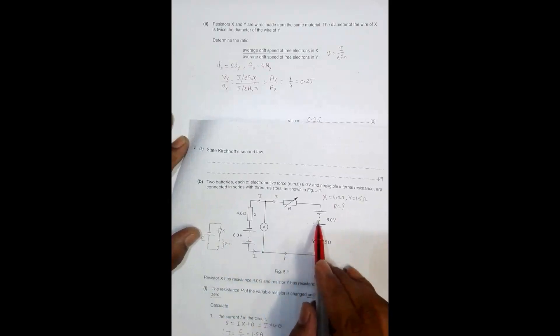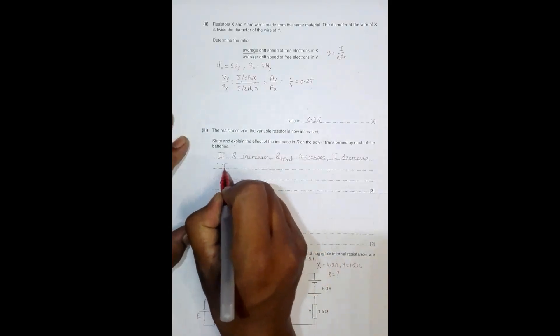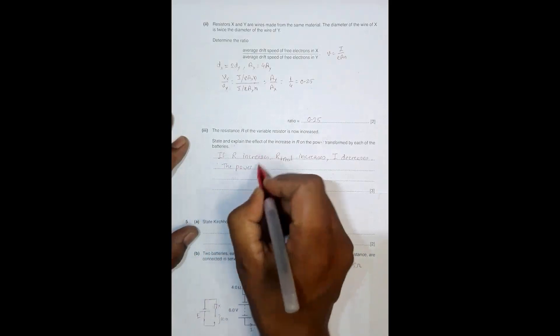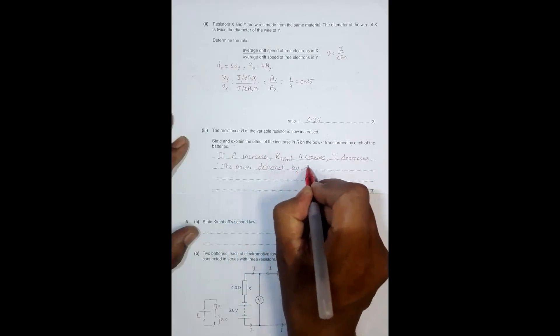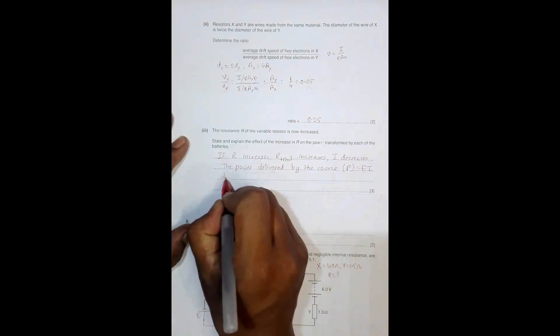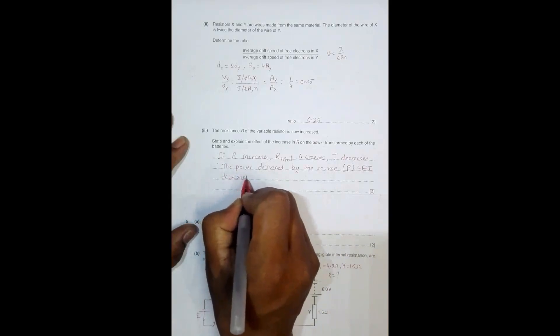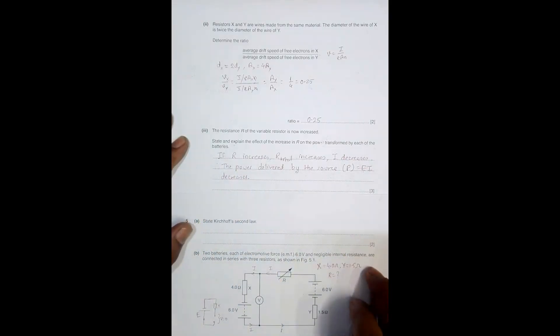The power given by each source is P equals E times I, where E is the EMF and I is the current. Since current decreases, the power delivered also decreases. So the power delivered by both sources should decrease because current decreases and the EMF remains constant.